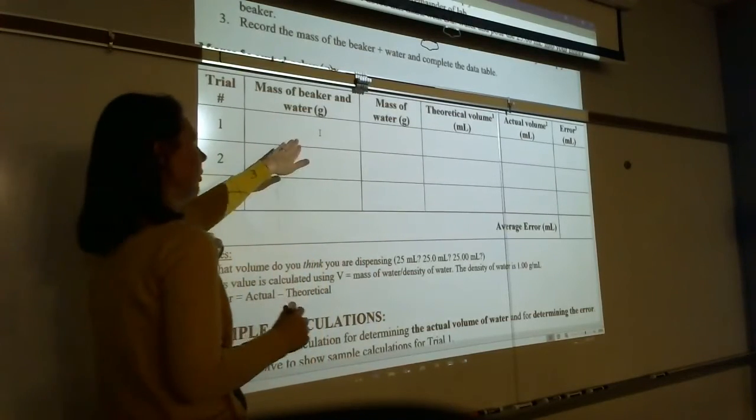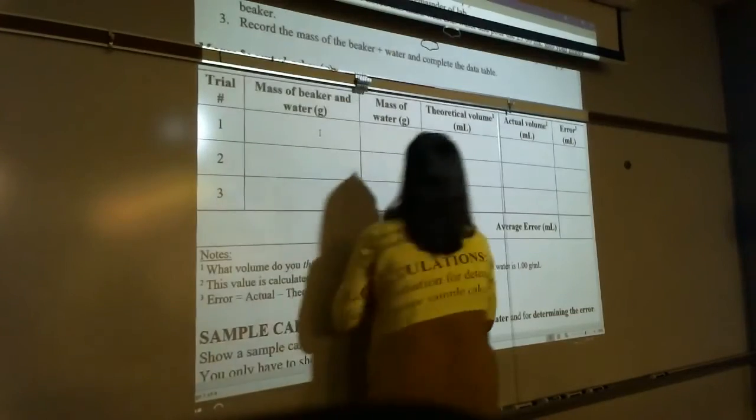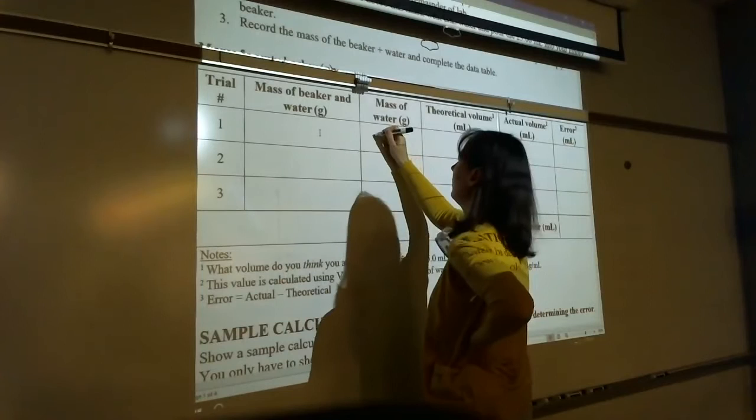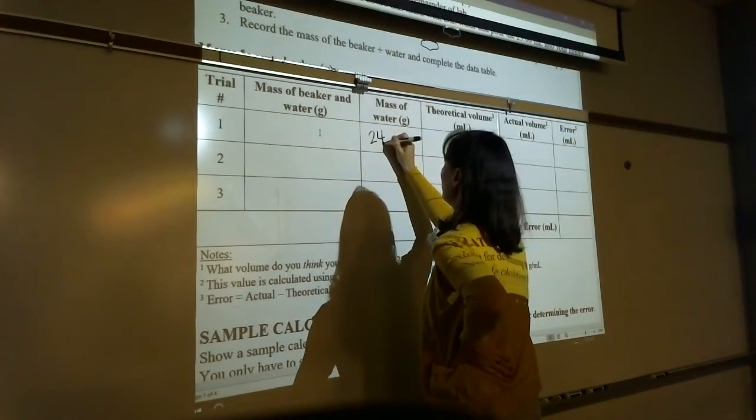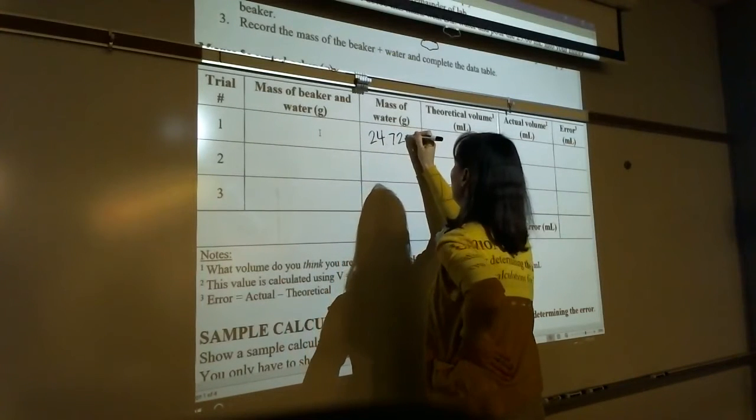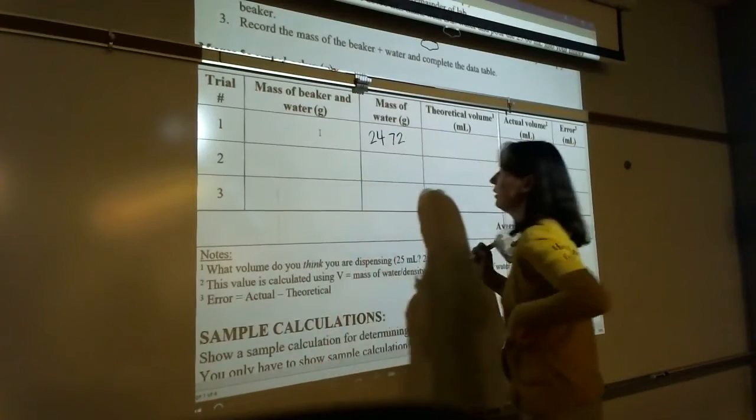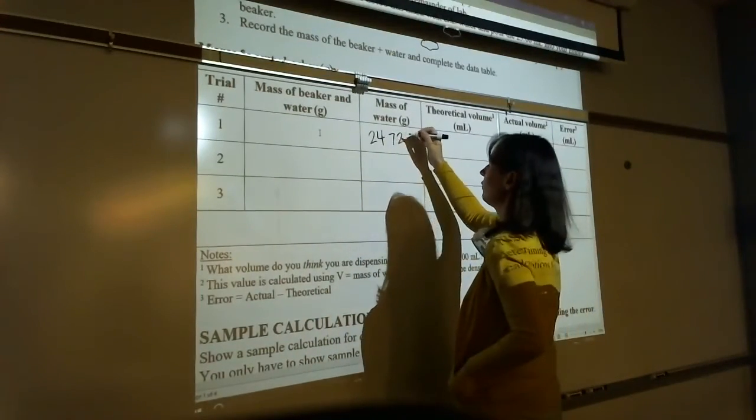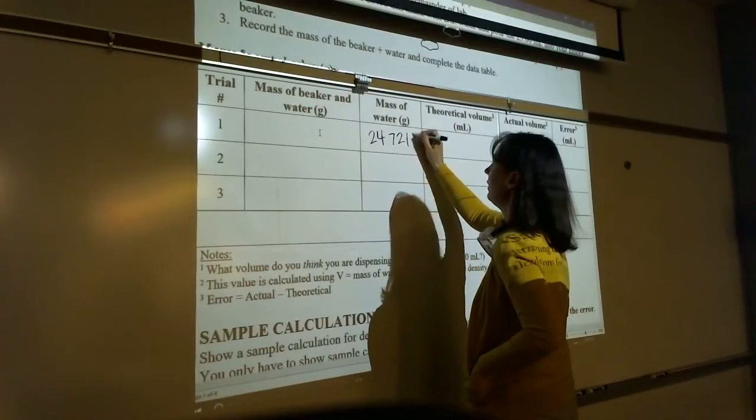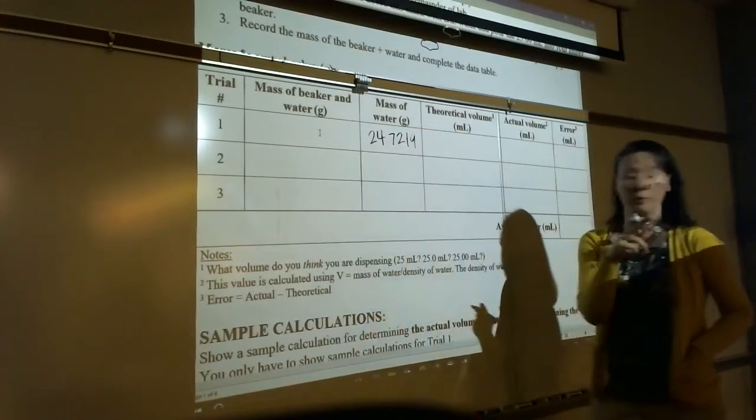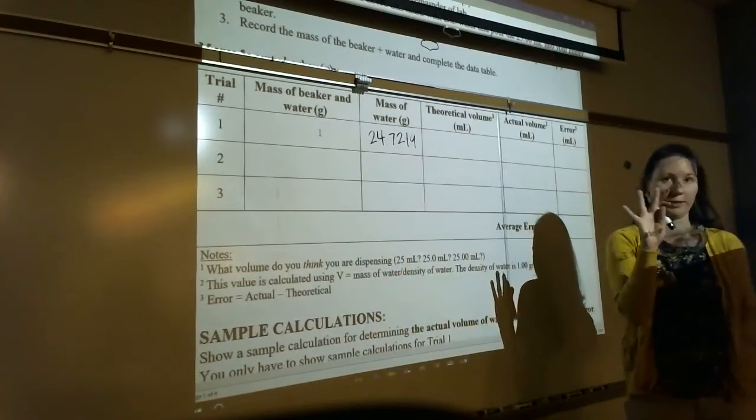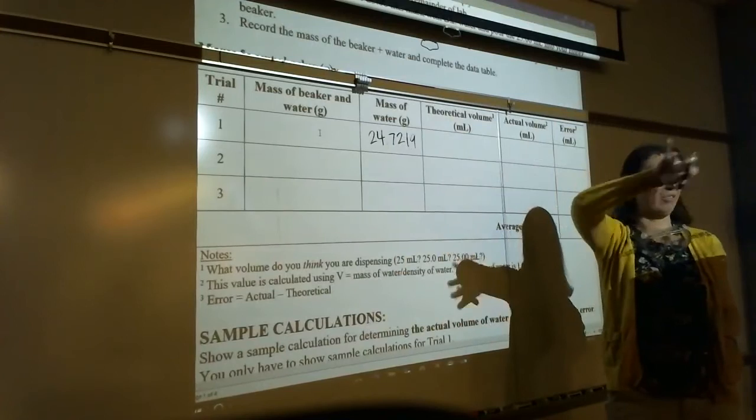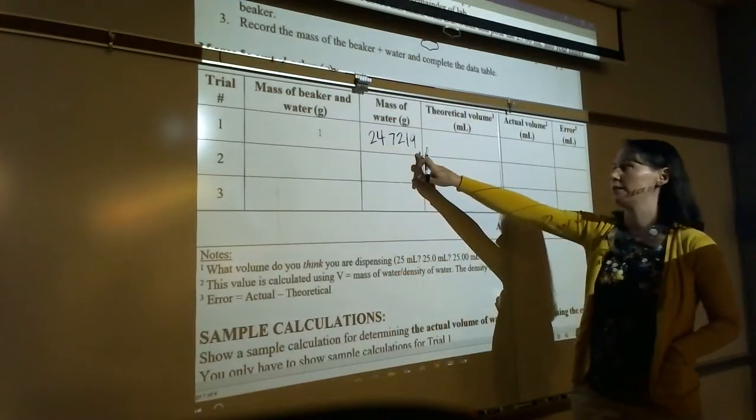But what you're doing here in your data analysis, this is really what I want to demonstrate for you. So here's your mass of your beaker and water. Let's pretend that the mass of the water comes out to be, I don't know, 24.72 grams. Actually, your balance is going to give you four sig figs, so let's pretend it's four decimal places. 7219, right? Because our analytical balance gives us four decimal places, and we never, ever round the balance. Ever. So record all the decimal places here.